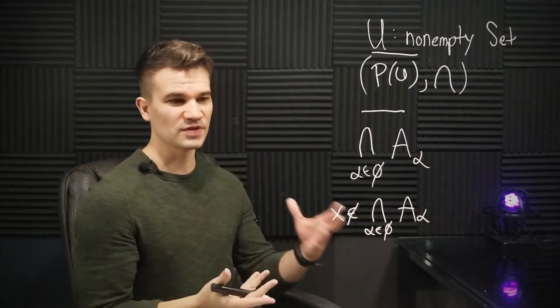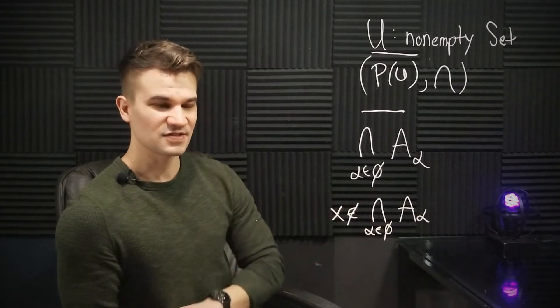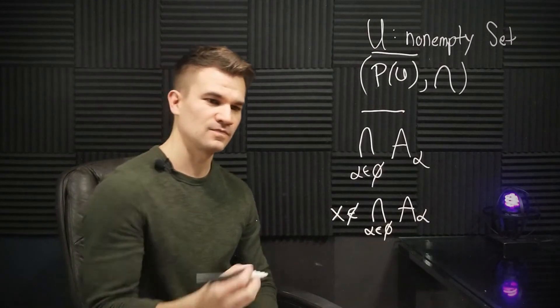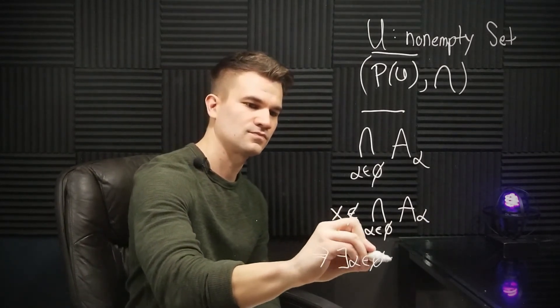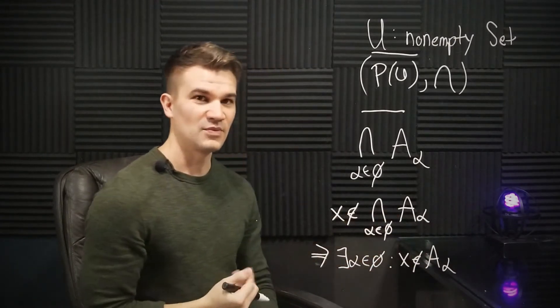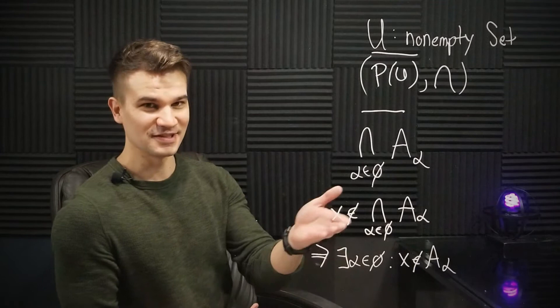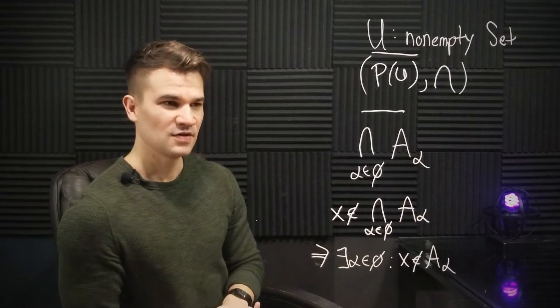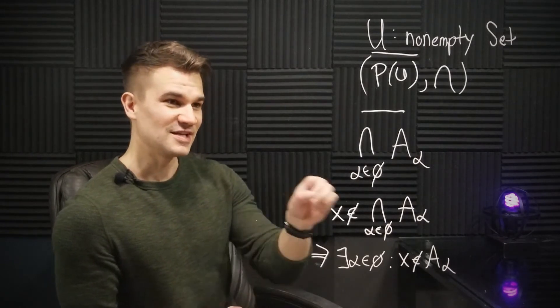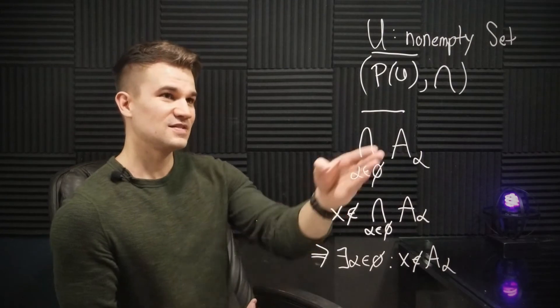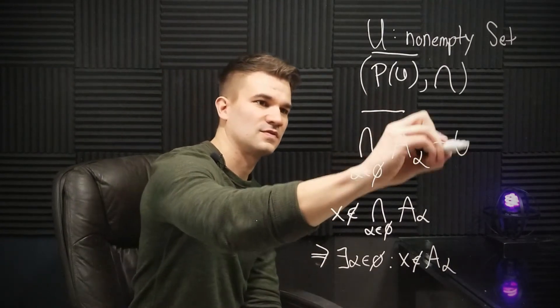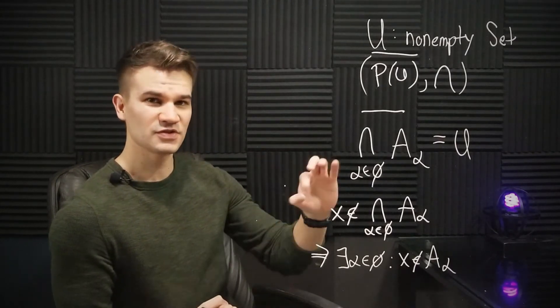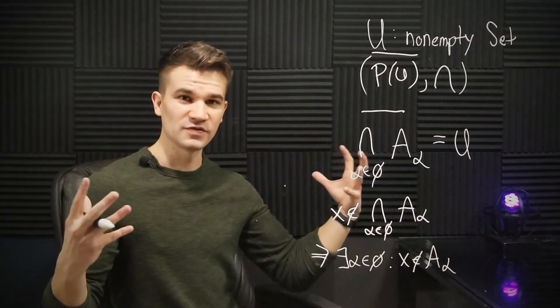You can kind of think about DeMorgan's laws here. X is not in this intersection would mean that there must be some subset A sub alpha that X is not in. And we have a contradiction here because there exists an alpha in the empty set—that's definitely false. So it must be false that X is not in this empty intersection. So that means the empty intersection, the intersection of no sets, is our universal set U. It's the overall set that we're working with. So that's a little strange, right? The intersection of no sets at all is the overall set universe that we're working in.